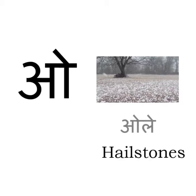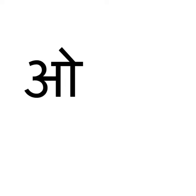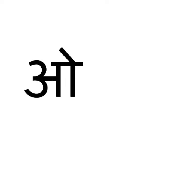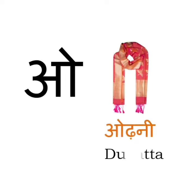It is a small hard ball of ice that falls from the sky like rain. O say odni. Odni means dupatta, which all girls like to take when they wear Punjabi suits.